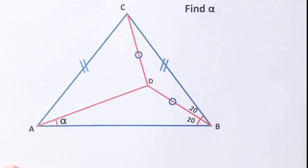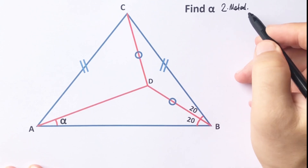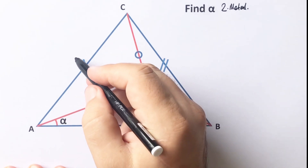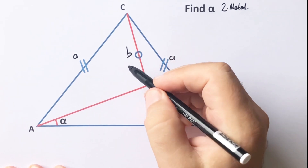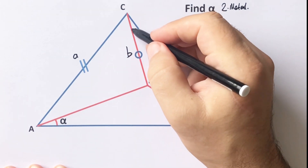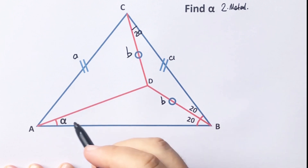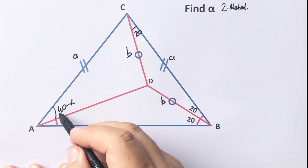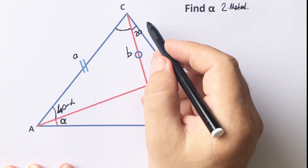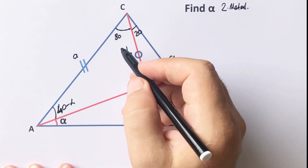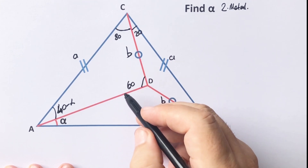Now we will calculate the value of alpha using the second method. First step: let's call these equal sides 'a' units and these two sides 'b'. Here is also 20 degrees. If it is 40, this angle must be 40 minus alpha. The apex is 100, which means here must be 80 degrees. So this angle must be 60 plus alpha.